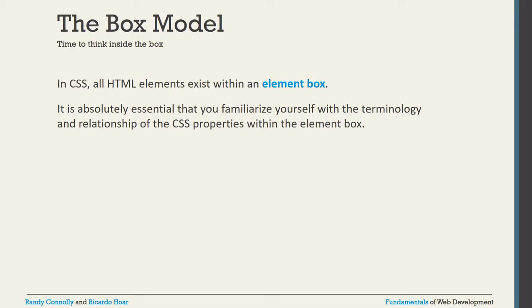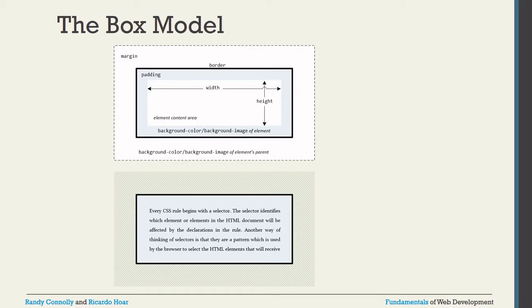Today we will discuss the box model in HTML using CSS. The box model is very important for designing web pages. You can see in the pictures there are two layouts — one is the dotted layout representing the complete screen, and inside that you are adjusting some content. Inside the box you see an image with some sentences — that is called the box model.